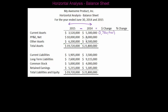Let's do all the dollar changes first. Ten million minus eight million — that is a positive change of two million dollars. My other assets were six point two million at the end of 2015 but they were eight point five million at the end of 2014, so that's a negative difference of two million three hundred thousand. Then my total assets decreased by two million eighty thousand.